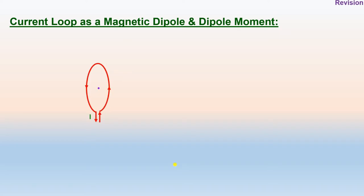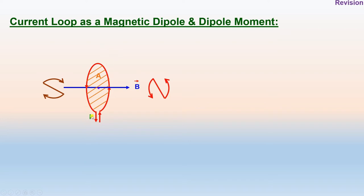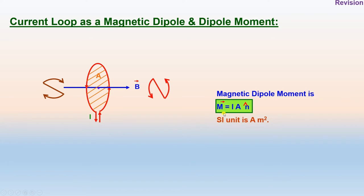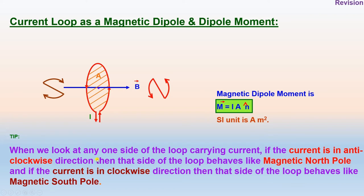We discussed the current loop as a magnetic dipole and magnetic dipole moment. We considered a magnetic loop with current I flowing through it and area of cross section A. The magnetic dipole moment of the current loop is given as M = IA unit vector, with SI unit of ampere meter square. When current is in anticlockwise direction, that side behaves like a magnetic north pole; if clockwise, it behaves like the magnetic south pole.